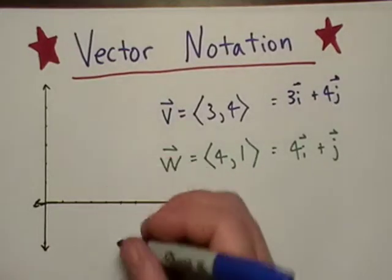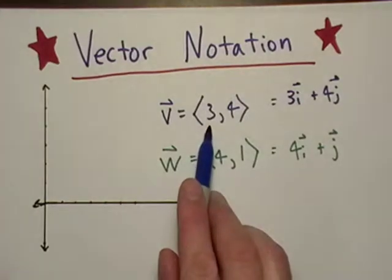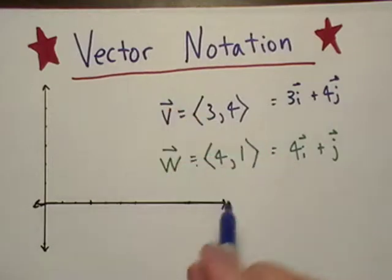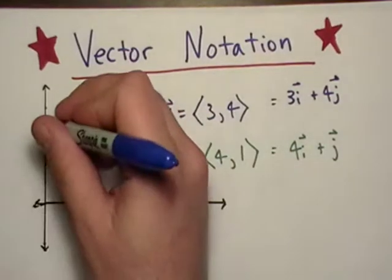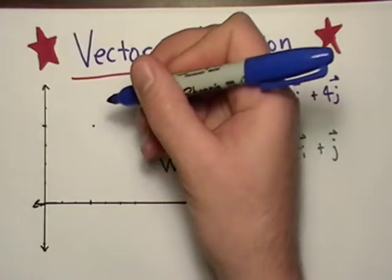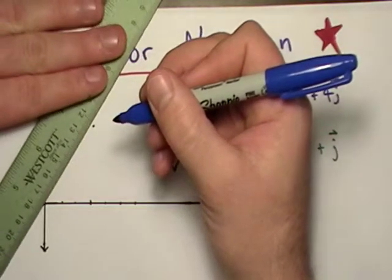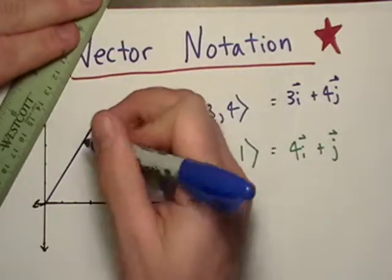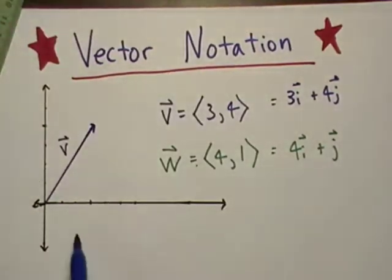Let me draw <3,4> real quick. My horizontal is 3, so I go over 3. Then my vertical is 4: 1, 2, 3, 4. This isn't going to be perfectly accurate, but let's draw this. There's v.